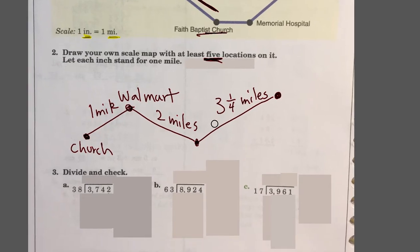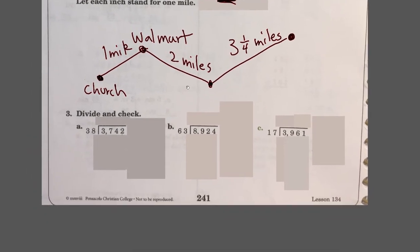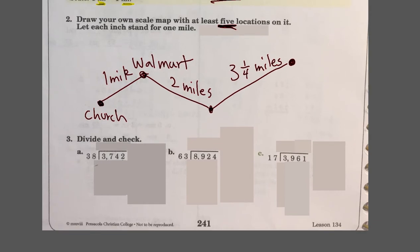This one is divide and check. I know some of you guys are having a hard time with long division, so let's just go over one of the problems together. Remember how I like to round the divisor to the nearest ten. Thirty-eight rounded to nearest ten will be forty. Ask yourself, can forty go into three? Nope. What about thirty-seven? Nope. What about three hundred and seventy-four? Yeah.